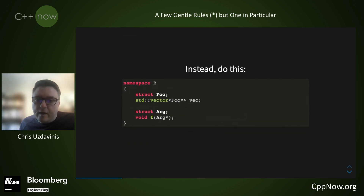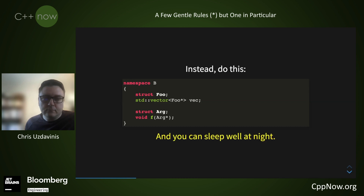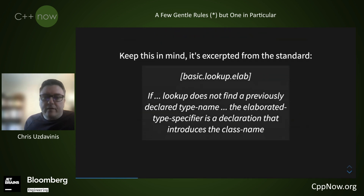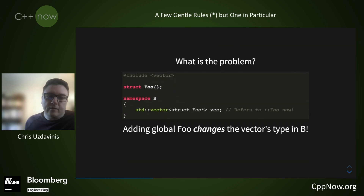Declaring your types before you use them is much safer code — no surprises, no gotchas, and it does what you think. Elaborated type specifiers will do a name lookup and only declare a new type if one was not found. This is the exact same vector as written before, but the presence of the global foo changes its meaning.